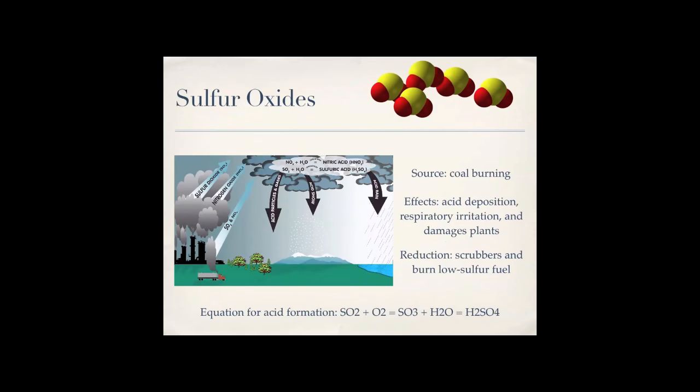Okay, sulfur oxides. Source: coal burning. The effects are acid deposition, respiratory irritation, like always, and it also damages plants through acid deposition. So, to reduce this, you can use scrubbers, or you can burn low sulfur fuel. And yet again, there is the equation if you need it. SO2 plus sulfur dioxide plus oxide equals SO3 plus water equals H2SO4.